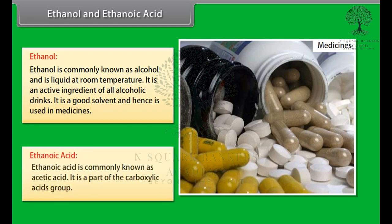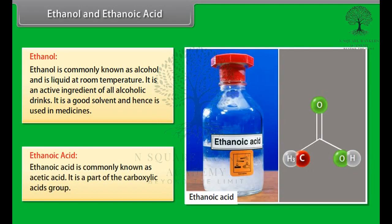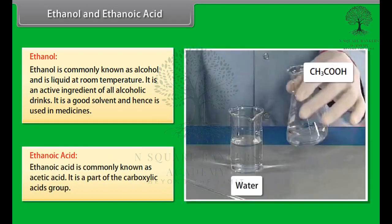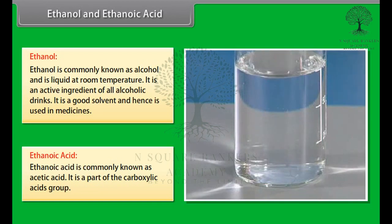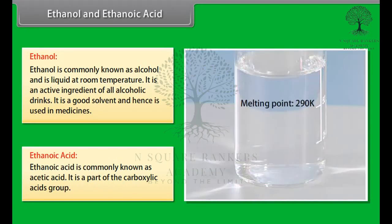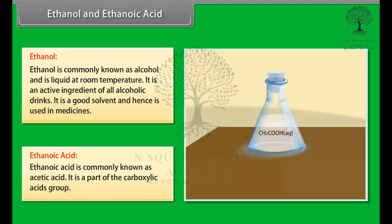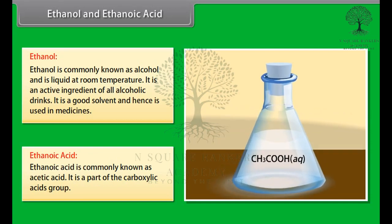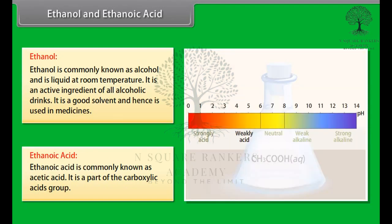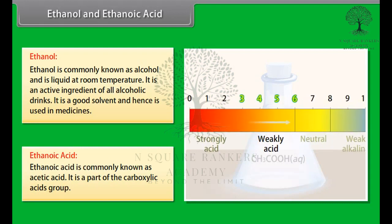Ethanoic acid. Ethanoic acid is commonly known as acetic acid. It is a part of the carboxylic acid group. When 5-8% solution of acetic acid is mixed in water, it forms a substance called vinegar. The melting point of pure ethanoic acid is 290 Kelvin. Because of this property, it freezes during winter and hence is also known as glacial acetic acid. Carboxylic acids are characterized by special acidity. However, as carboxylic acids are not ionized, they are weak acids.